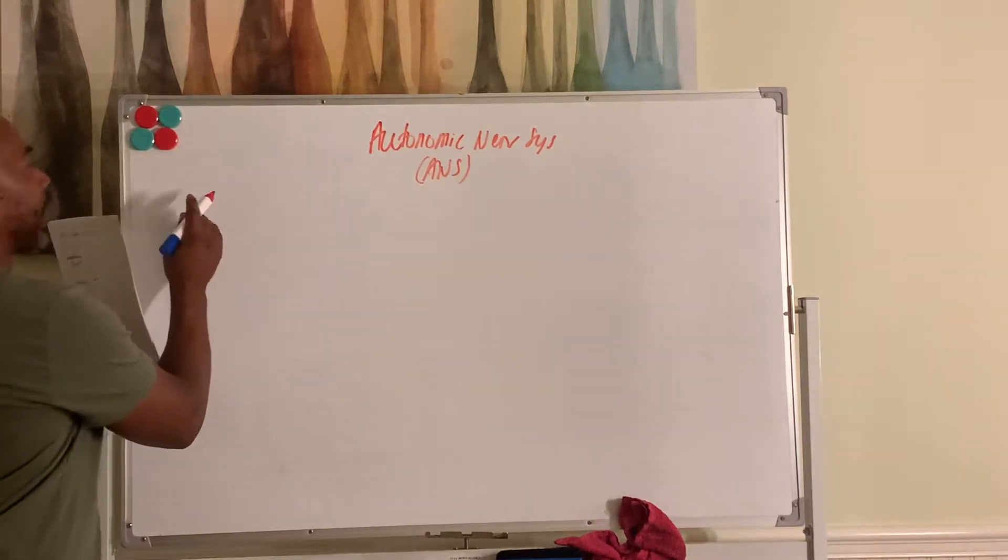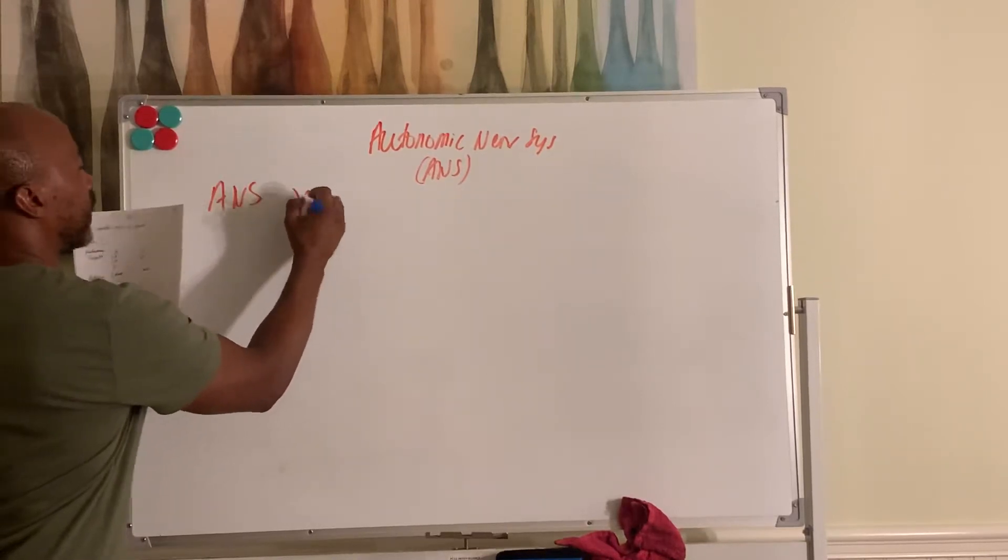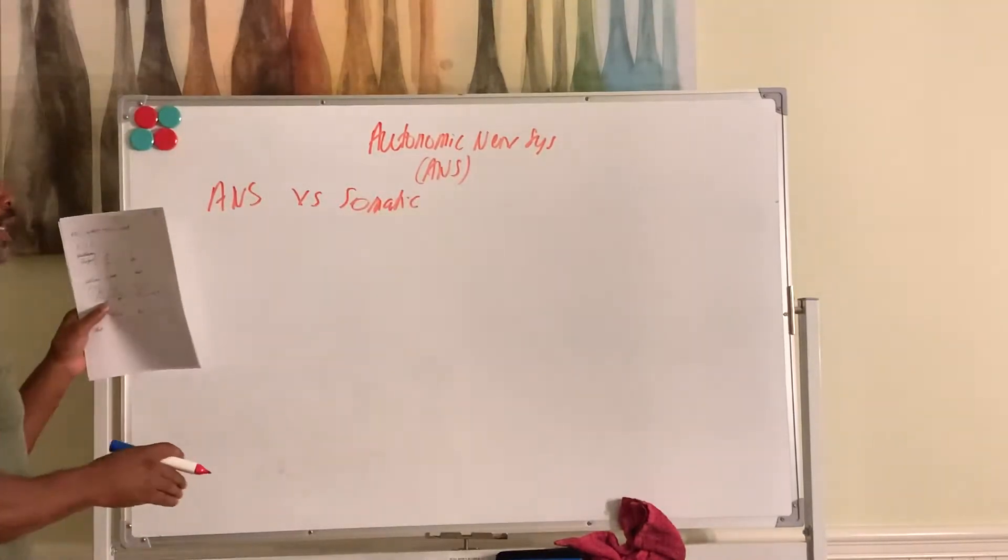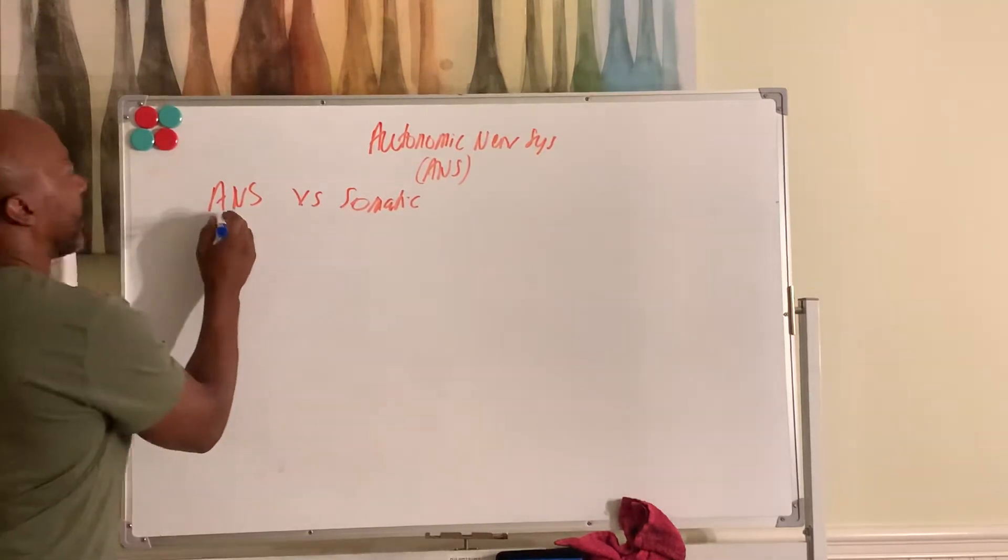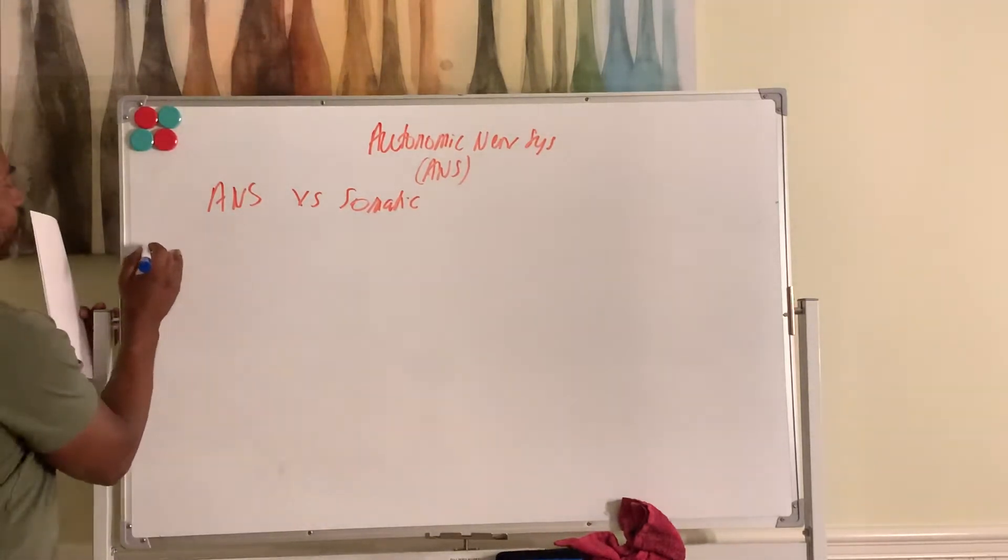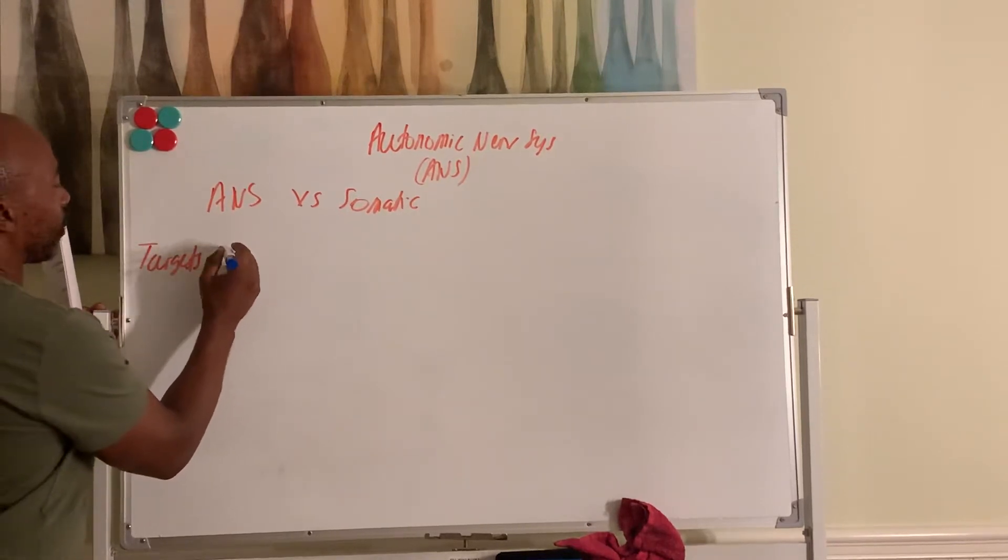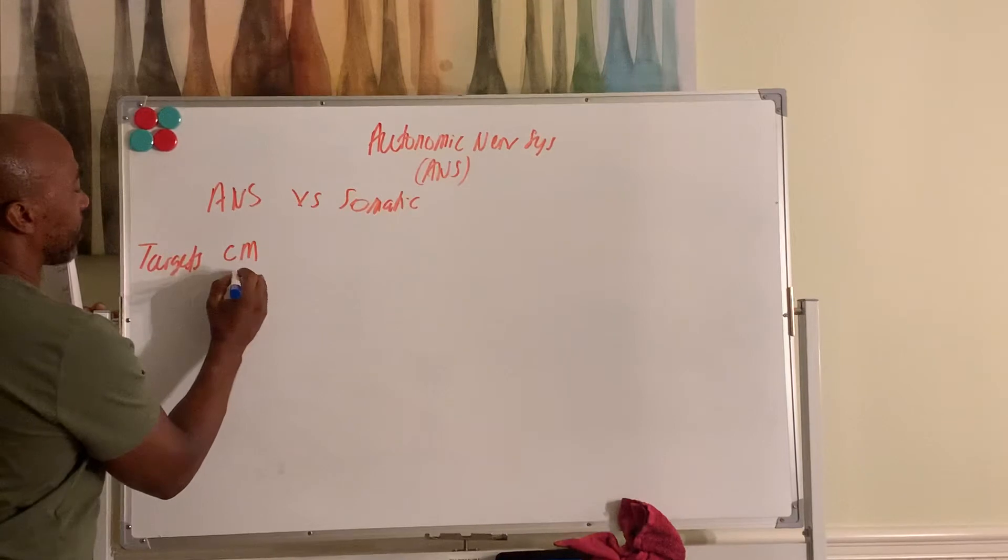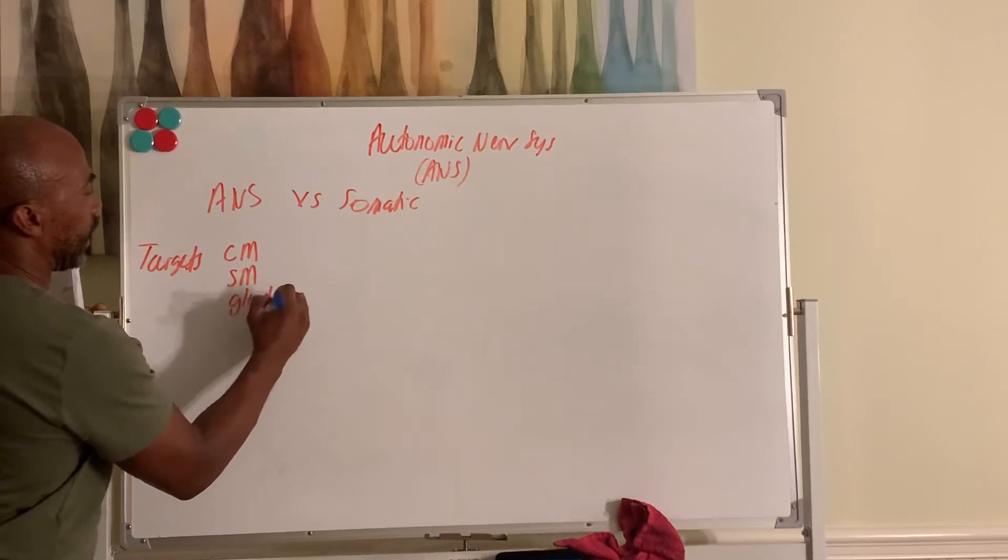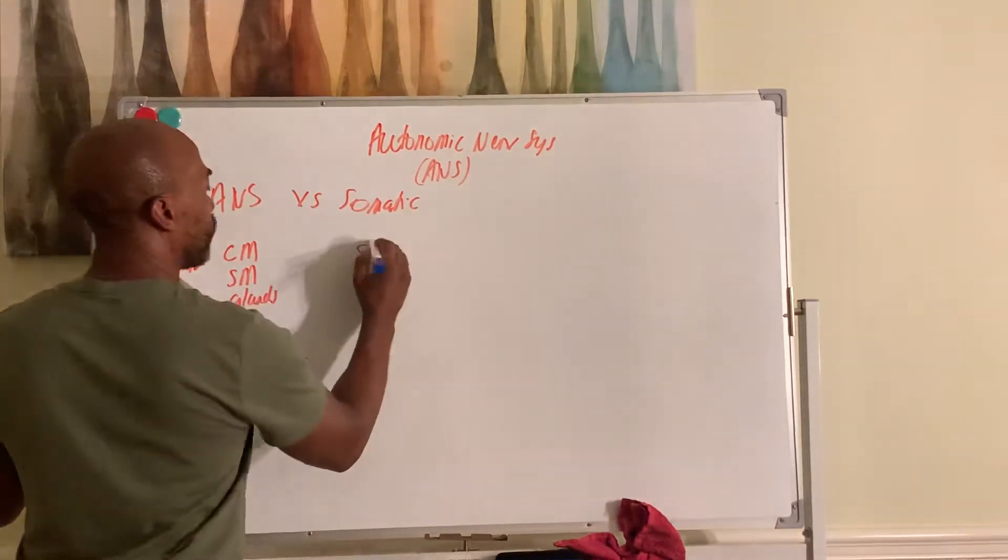And so we can compare this system, the ANS, versus the somatic nervous system, which controls our skeletal muscles. Let's compare these two systems and see how they differ and how they may be similar. So for one, let's look at the targets. The targets of the ANS are your cardiac muscles, smooth muscles, and your glands. The target of the somatic nervous system is just your skeletal muscle.